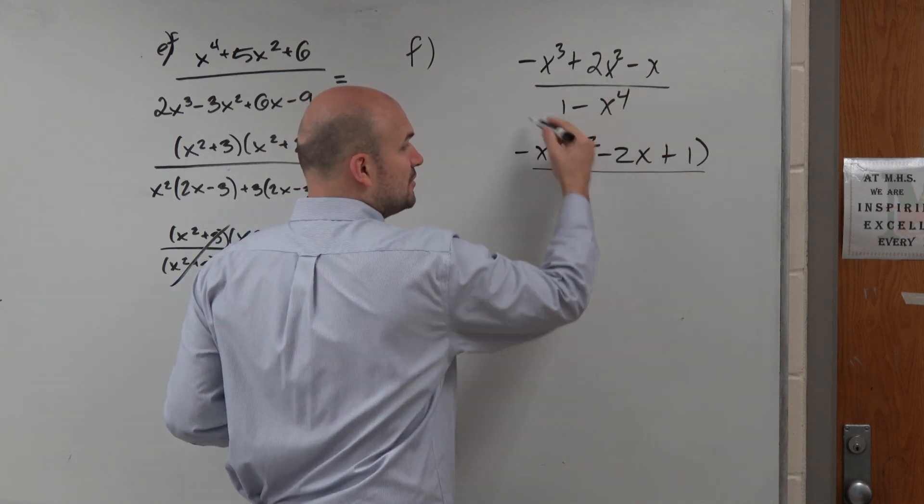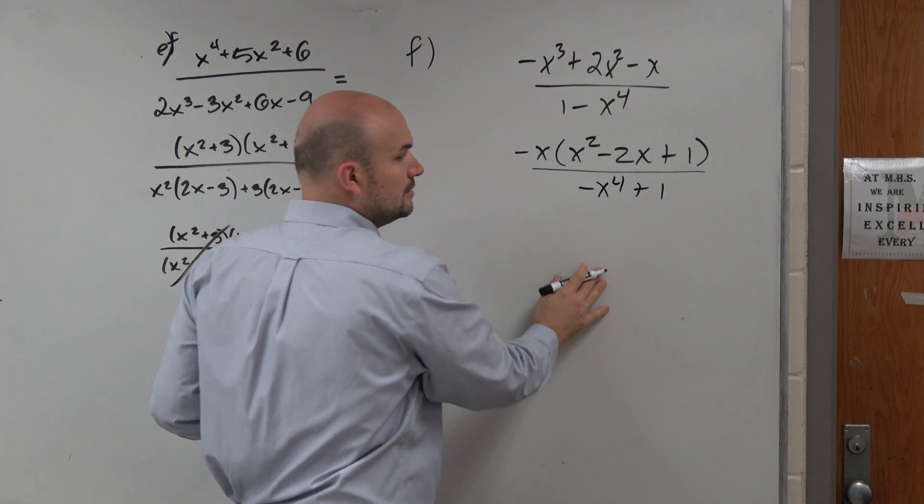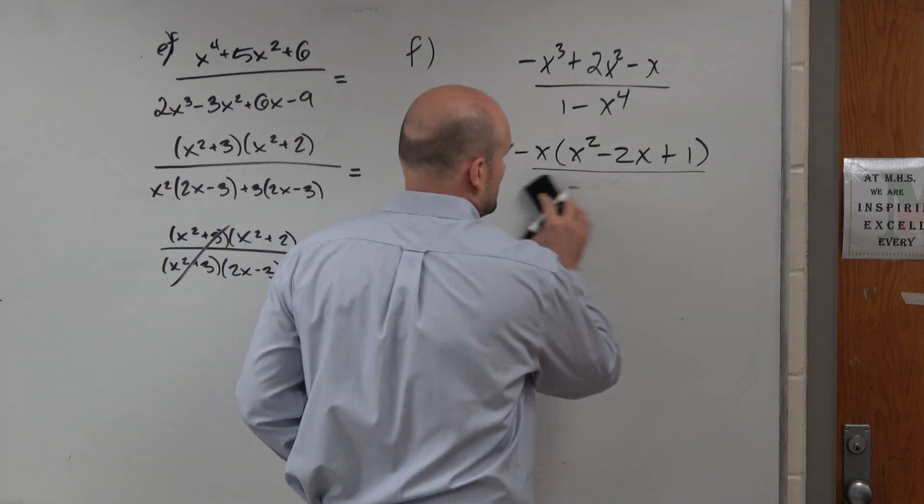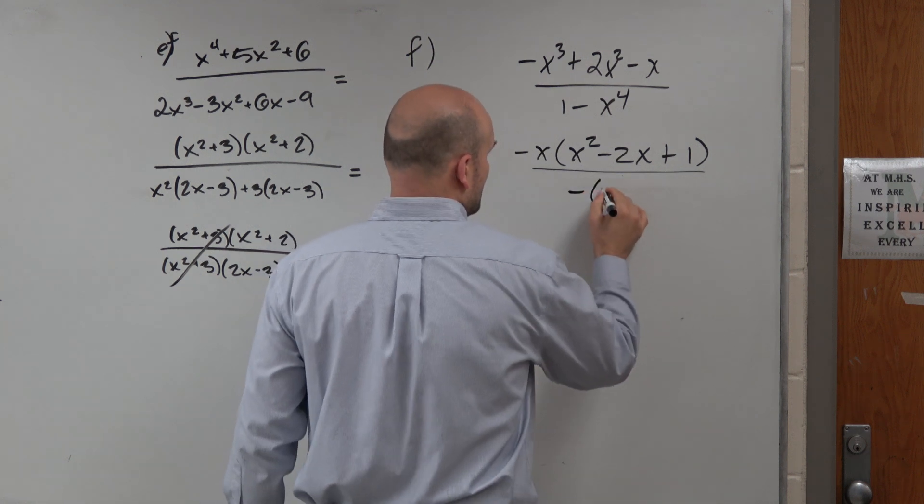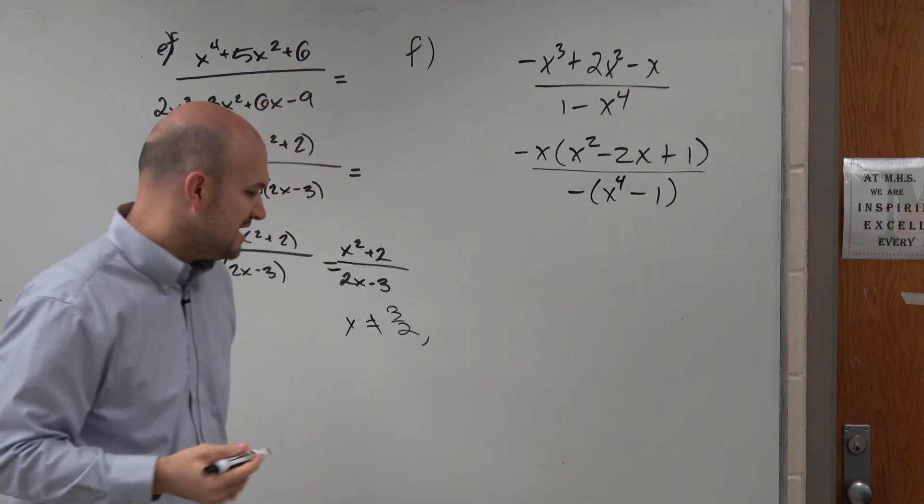I'm going to rearrange this. And remember, when you rearrange this, you can see that if I factored out a negative, I would get x⁴ - 1. Actually, I'll just do it here.